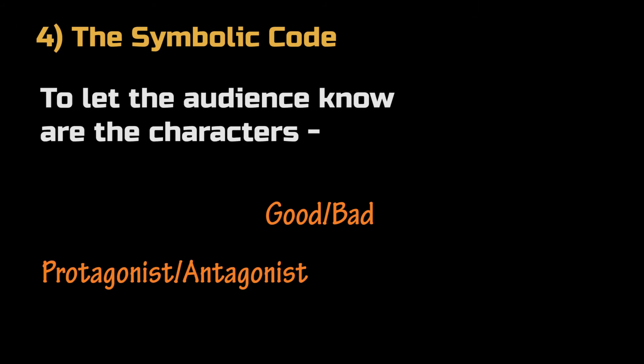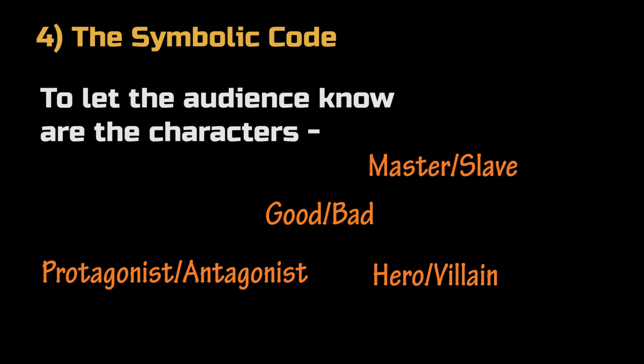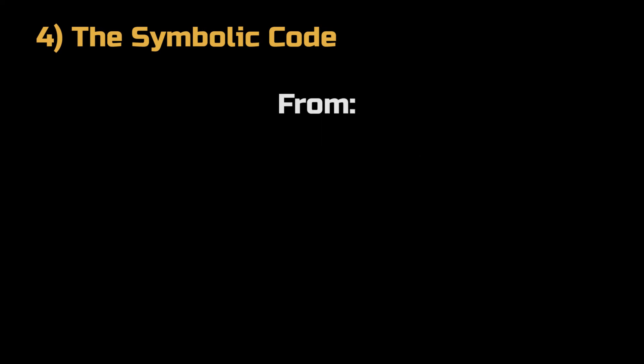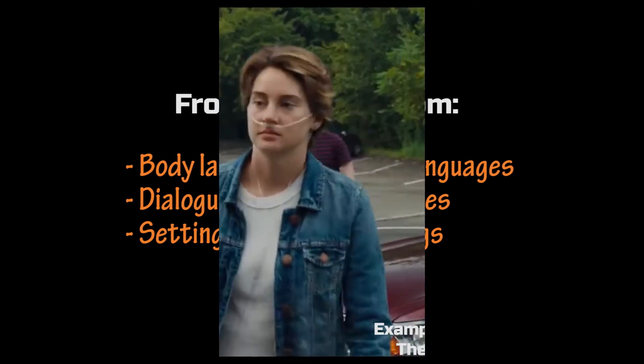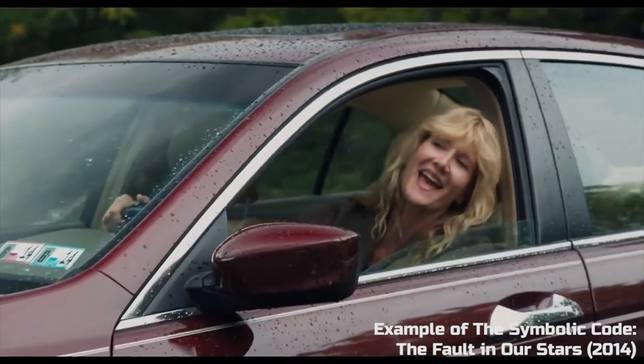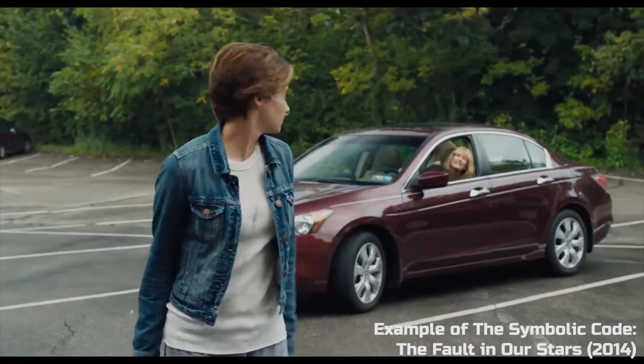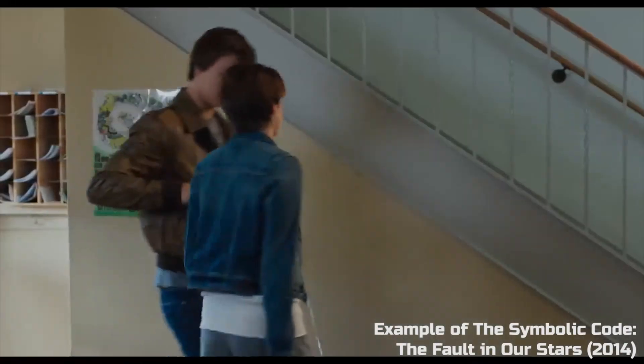The symbolic code allows the audience to know who the characters are — whether they are good or bad, protagonists or antagonists — from their body language, their looks, and settings. Below is a scene from the film trailer of The Fault in Our Stars.